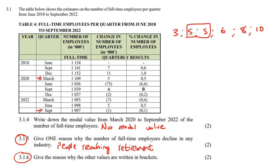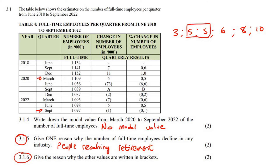This question says give the reason why some values are written in brackets. Whenever we have brackets on a document like an invoice or financial table, it's usually to mean a negative. For example, going from 1,141 to 1,152 you add 11, and from one number to another you add 7 — but from one number to another you have to minus 73, so that gets brackets. Brackets are there to represent a negative value.